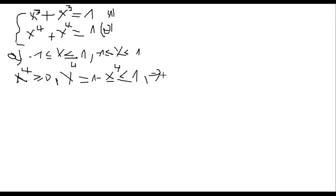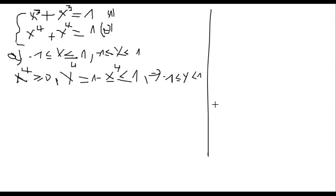Therefore y is between negative one and one. Similarly, x is also between negative one and one. These are our established bounds for both variables.